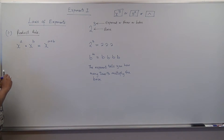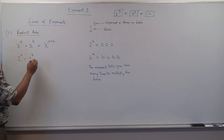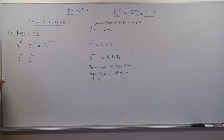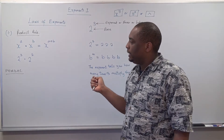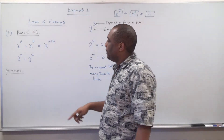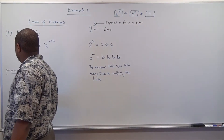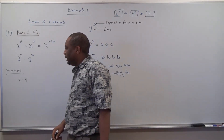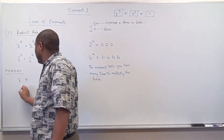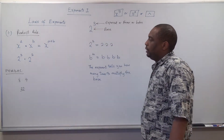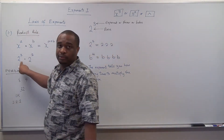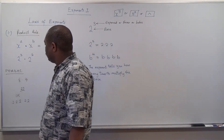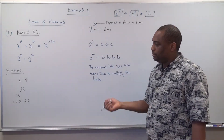So if we have something like 2 raised to power 3 times 2 raised to power 2, if we use PEMDAS — parenthesis, exponents, multiplication, division, addition, and subtraction — this would be: 2 raised to power 3 is 8, times 2 raised to power 2 is 4, and 8 times 4 gives you 32. Another way: you have 2 times 2 times 2 for 2 raised to power 3, then times 2 times 2 for 2 raised to power 2, which is 2 multiplied five times, giving 32.